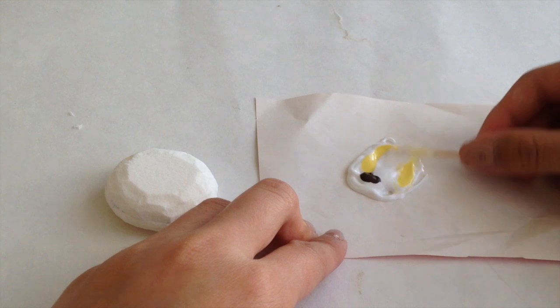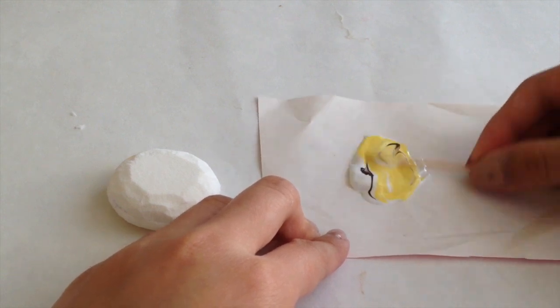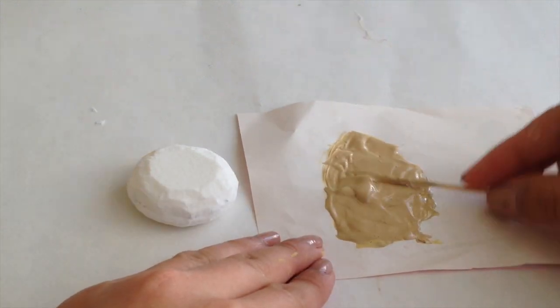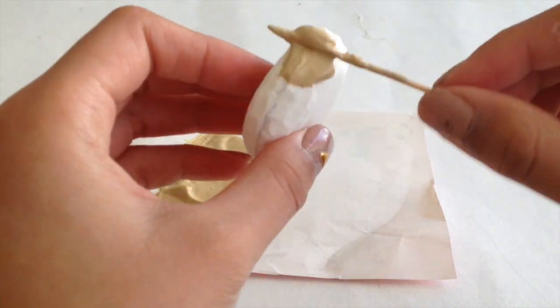Mix together yellow, white, and brown puffy paint to get this kind of tan color like this. And now you can just start covering your cookie in the color.